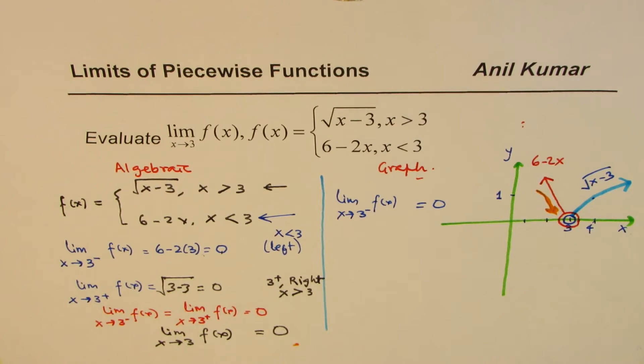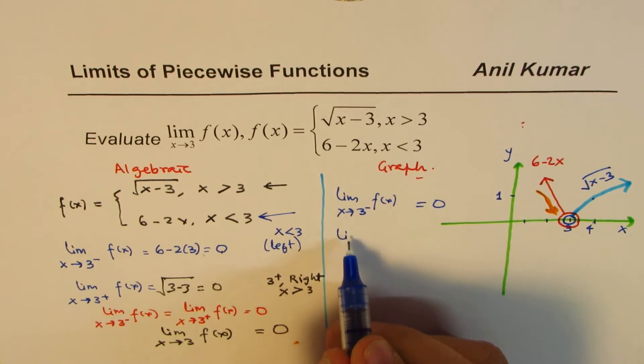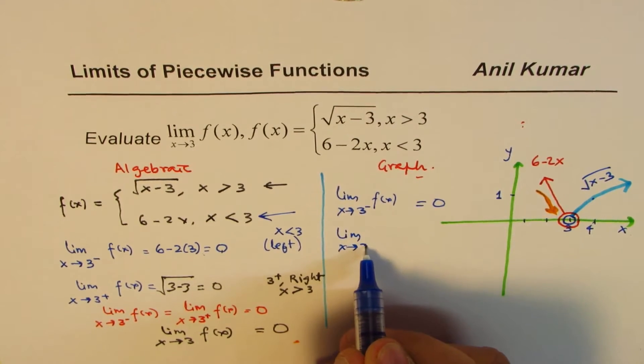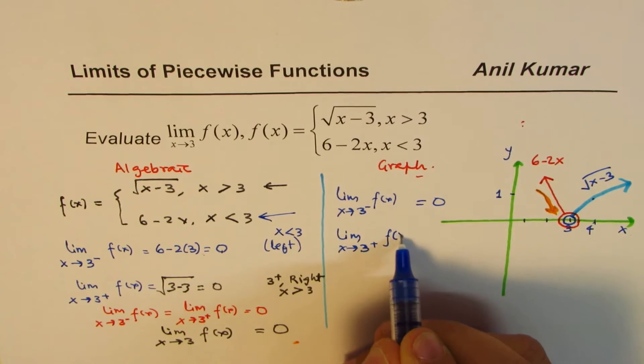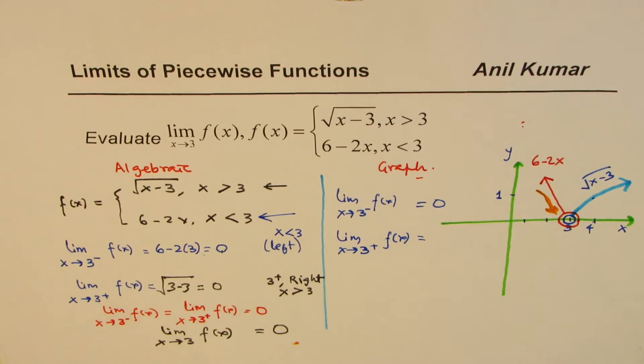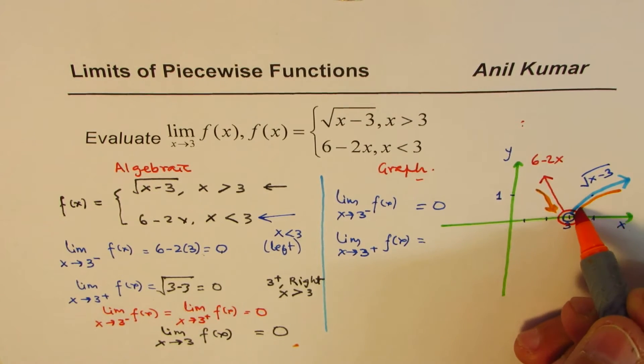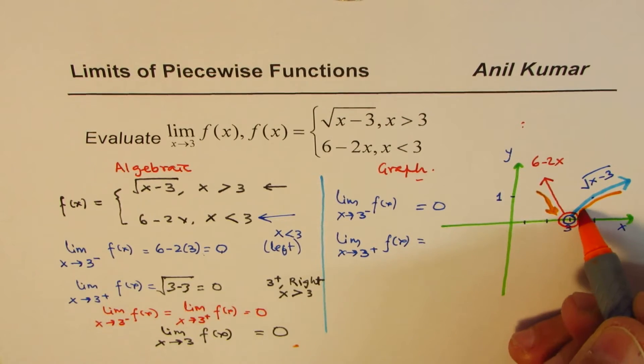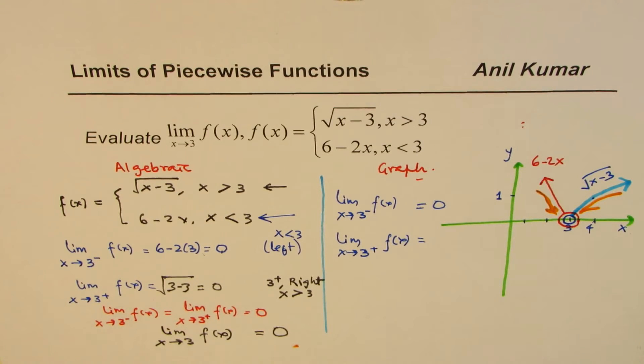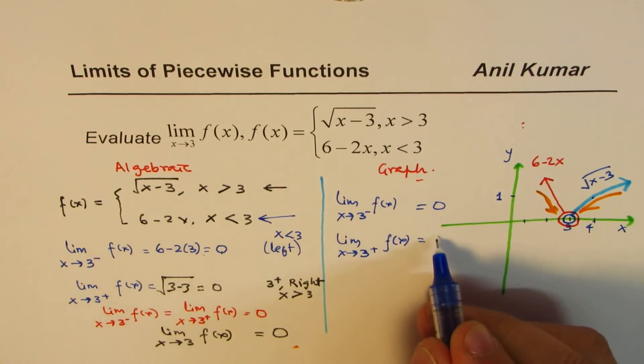The other limit, again, is limit when x approaches 3 from the positive side for the function is what? Now, this one, you are approaching from here. But as you approach 3, you are approaching a value, which is again 0. So this is also 0.